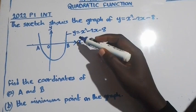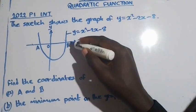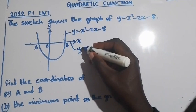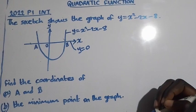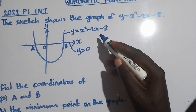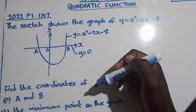So step 1: to find the coordinates of A and B, we need to identify the name of this equation. This equation is y equal to 0, because the x-axis always has y equal to 0. So we are going to solve the zeros of this function by replacing y with 0, so that we can solve for x.